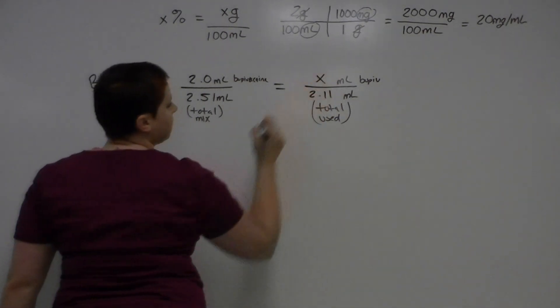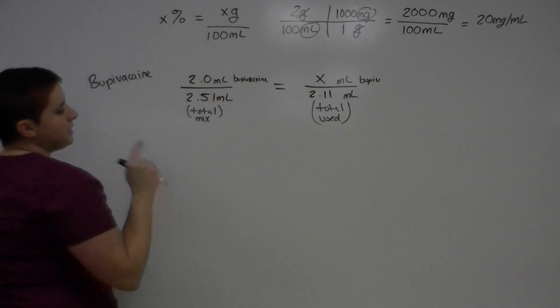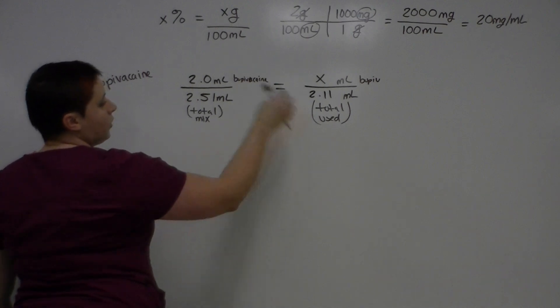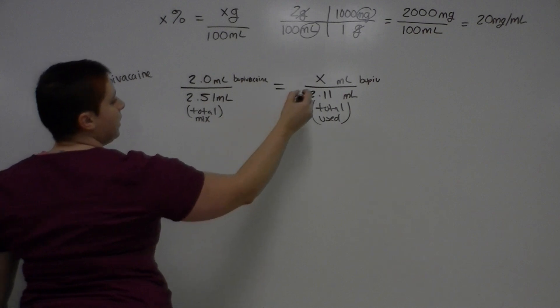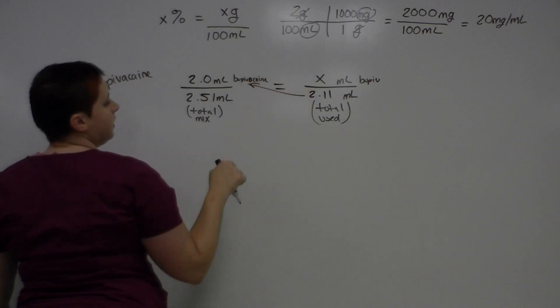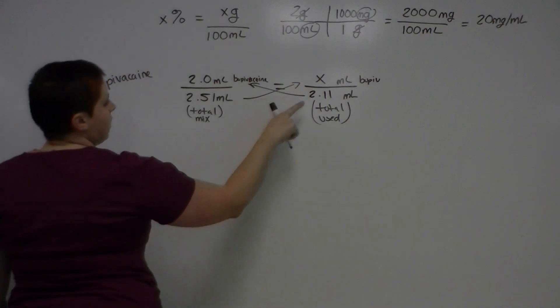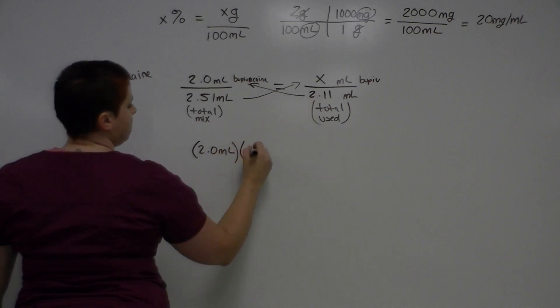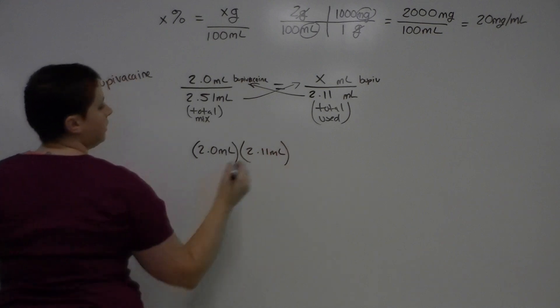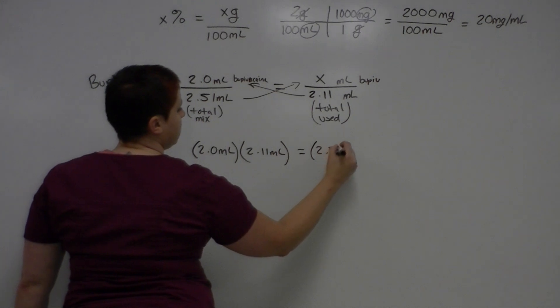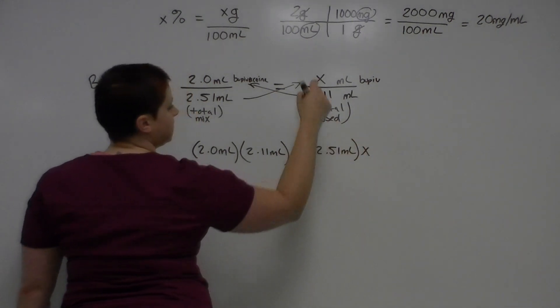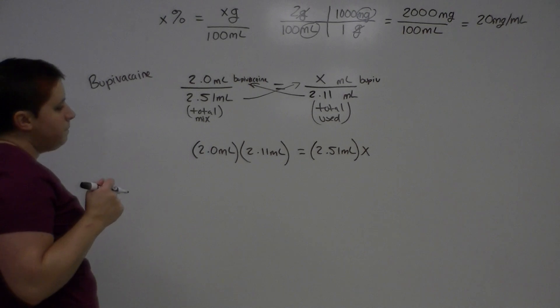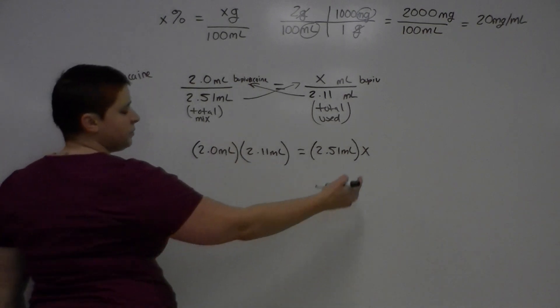So we used 2.1 milliliters, and I'm trying to figure out how much of that was bupivacaine. So I put an x here, and there's a couple ways you could go about this. If you remember your rule of cross multiplication, you can do that. Or you can turn it into an algebraic equation, again, with doing your cross multiplication. So if you remember, if I multiply this by this, it will equal this multiplied by this. So if I bring these over, I have 2.0 milliliters times 2.11 milliliters equals 2.51 milliliters times this x. And I'm not going to bring my unit down, because we'll get the unit at the end. So then from here, in algebra, remember you want to get the x alone. So since this is multiplication, if I divide by this 2.51, I'll get the x by itself.